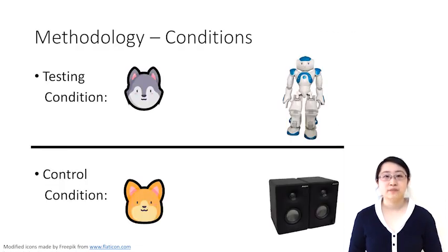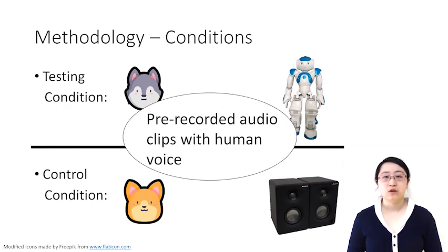We conducted a between-participant study with two conditions. In the testing condition, we used a robot. In the control condition, we used a loudspeaker. In both conditions, we used pre-recorded audio clips with human voice rather than text-to-speech module to make it easier for the dog to interpret.